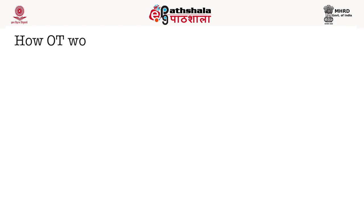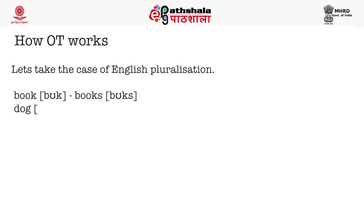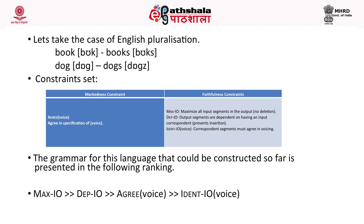Now let us see how OT works by taking an example of English pluralization. In English, 'book' becomes 'books' and 'dog' becomes 'dogs.' The plural morpheme has two allophones: /-z/ and /-s/. The plural morpheme agrees in voicing, giving two allophones depending on that. We need to prepare a constraint set. There must be a markedness constraint about agreeing in voice (AGREE-VOICE) and faithfulness constraints: MAX-IO (no deletion), DEP-IO (no epenthesis), and IDENT-IO for the feature voice — meaning if the feature voice is present in the input, it should also be present in the output.